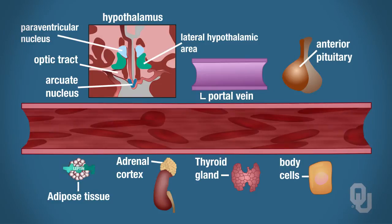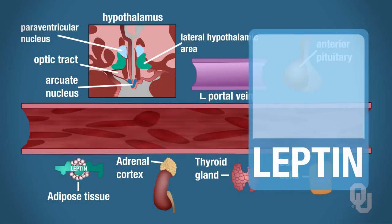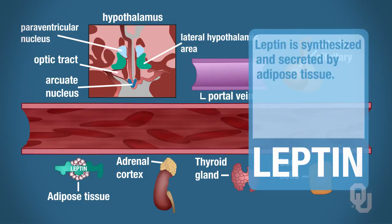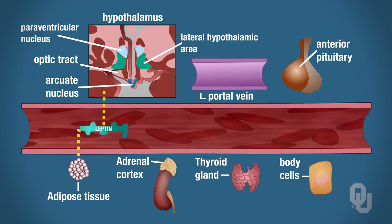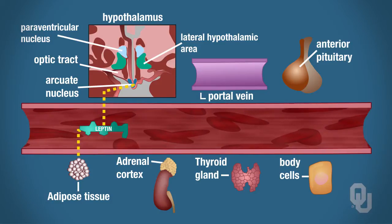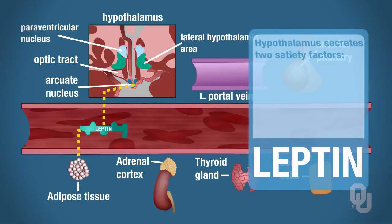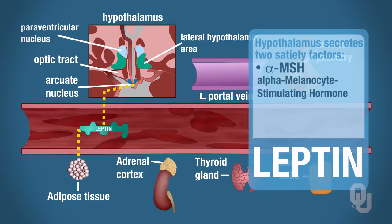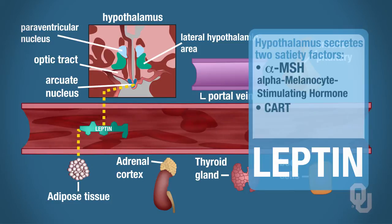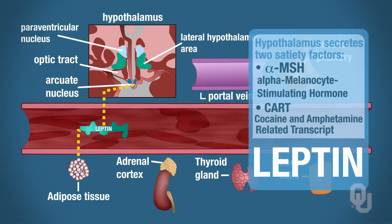Let's take a closer look at leptin. Leptin is a hormone that is synthesized and secreted by the adipose tissue. Since it's a hormone, it goes into the bloodstream and targets the hypothalamus. Once it targets the hypothalamus, the hypothalamus synthesizes and secretes two satiety factors: alpha-MSH—alpha-melanocyte-stimulating hormone—and CART, which stands for cocaine and amphetamine-related transcript.